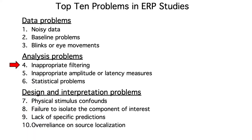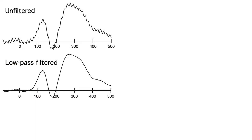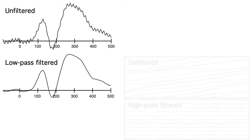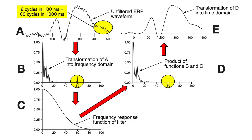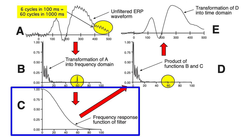Let's start with filtering. Low-pass filters are used to attenuate high-frequency noise, like muscle activity and induced activity from electrical devices in the recording environment. High-pass filters are used to attenuate low-frequency noise, like skin potentials. We can think about filtering in the frequency domain. A filter has a frequency response function which indicates how much it passes versus attenuates any given frequency.